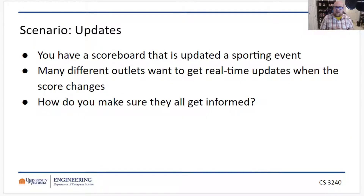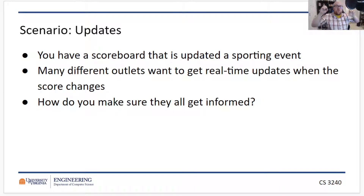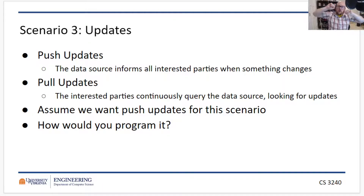The last behavioral pattern we want to talk about involves updates. What if there's some variable or state in your program that, when it changes, the program needs to update several different things? For example, let's say you're making a scoreboard that updates whenever an event occurs — a basket is scored — and it updates the scoreboard at the time the change occurs. At the time the underlying data changes, something responds to that change. You can think of this as two different types of updates. There are push updates, where the data source informs all interested parties that something has changed.